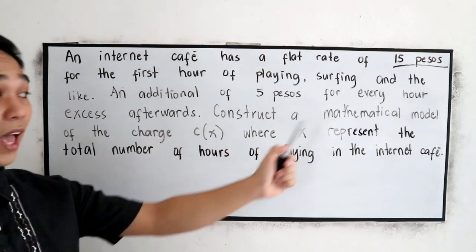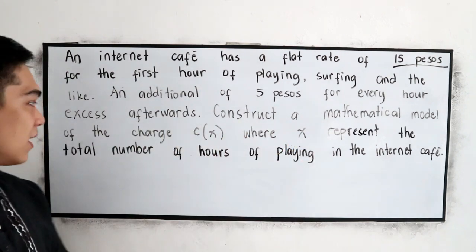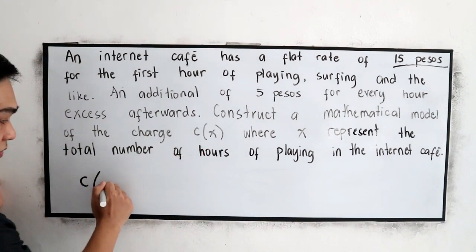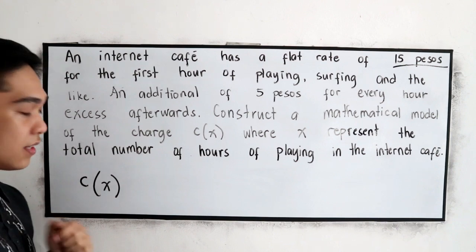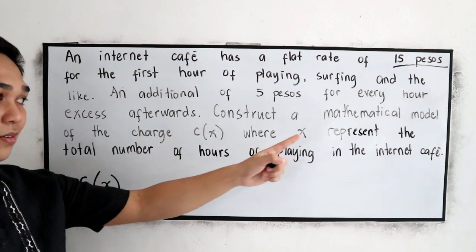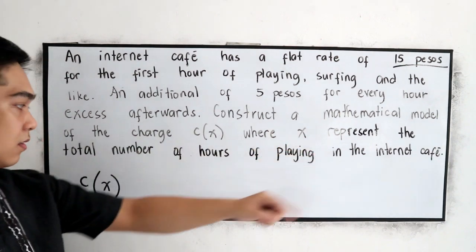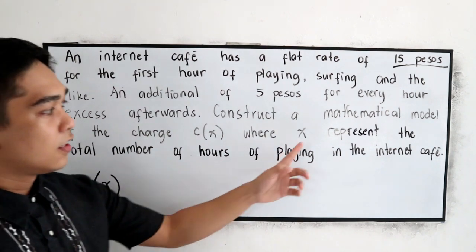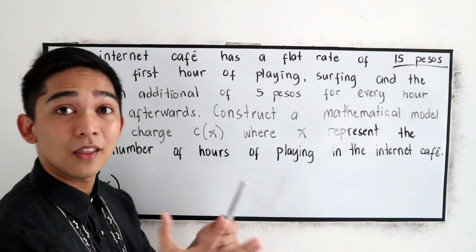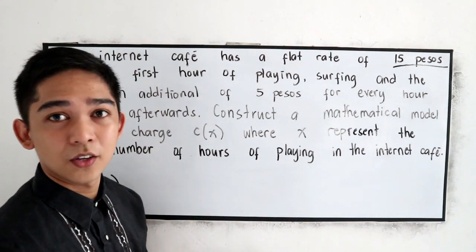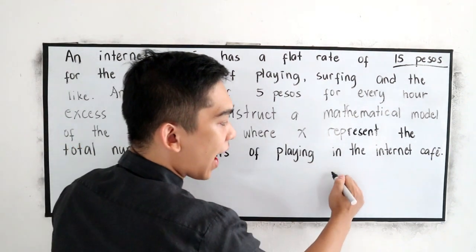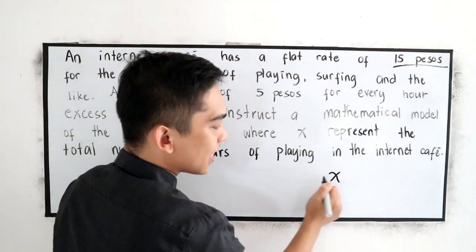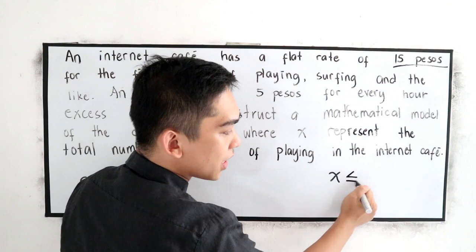Construct daw tayo ng mathematical model of the charge C(x), so meron tayong C(x) wherein x represents the total number of hours. So x is the total number of hours. So if you have x is less than or equal to one.